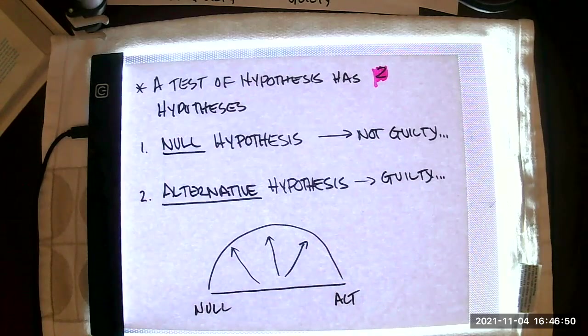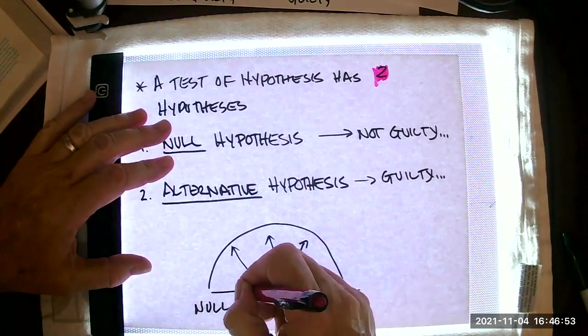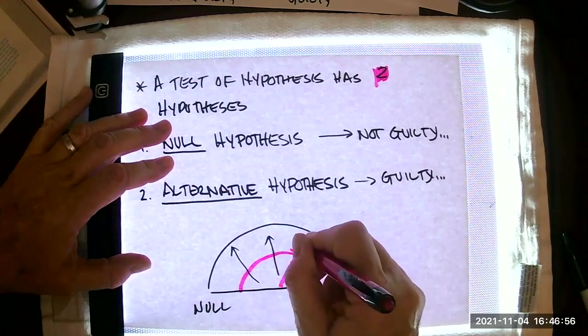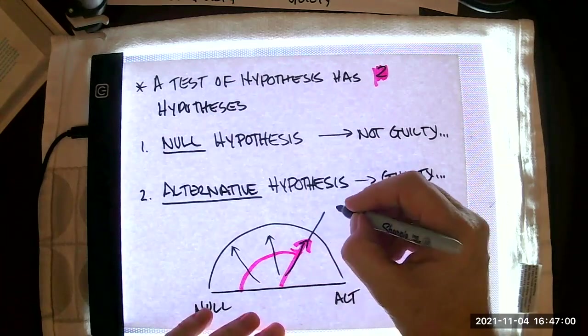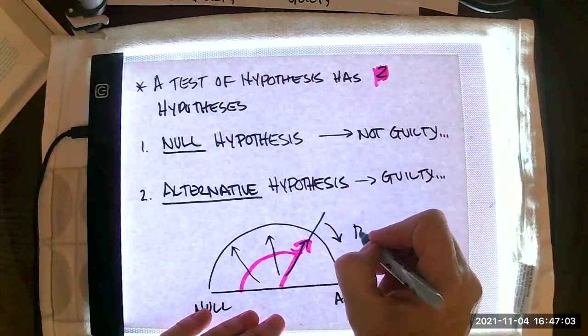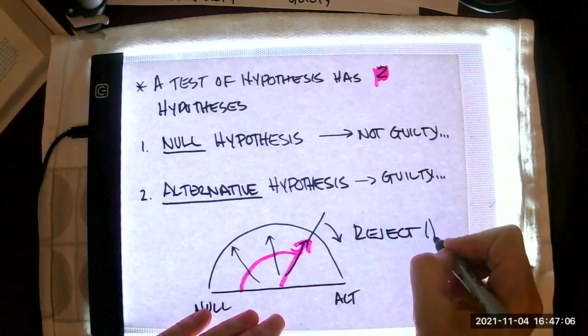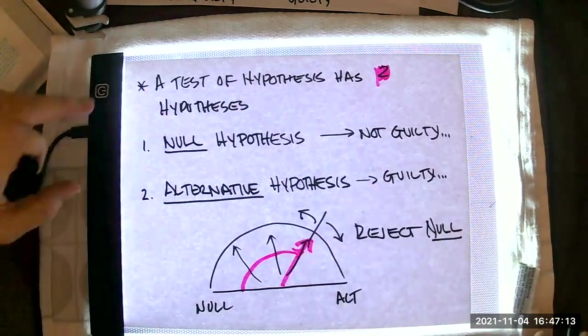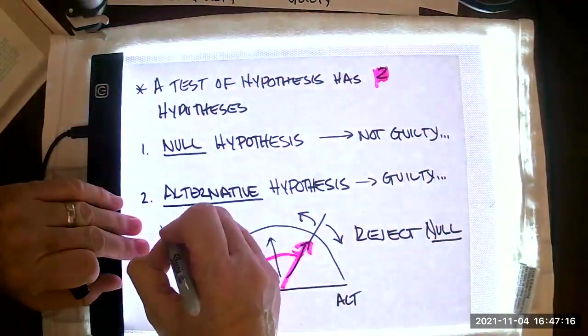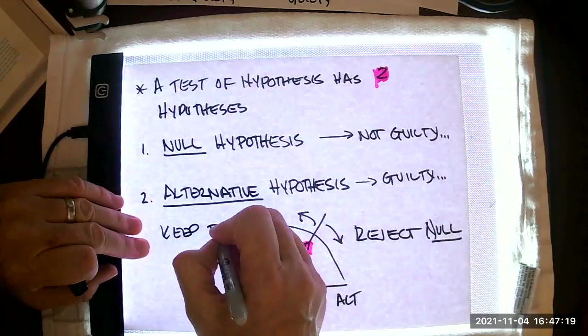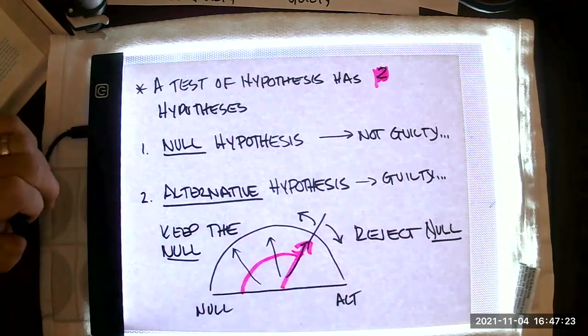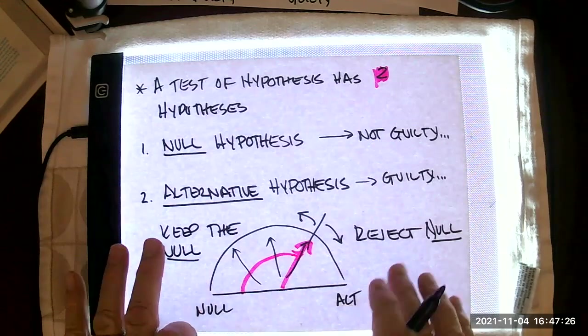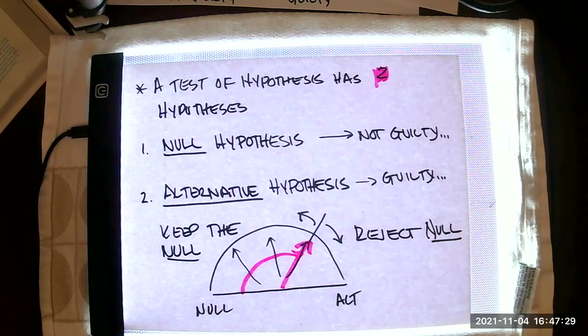So there are two hypotheses. We start with the null hypothesis, and then if the evidence is strong enough, as that evidence accrues and moves that needle, there will be a certain place where if the evidence is stronger, we essentially reject that null hypothesis. And if the evidence doesn't reach that level, we keep the null hypothesis. That's really the way this thing works.